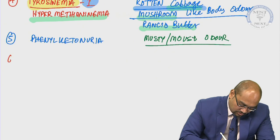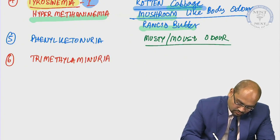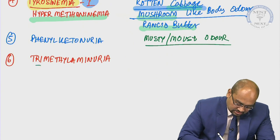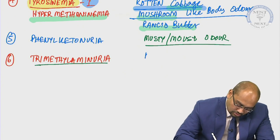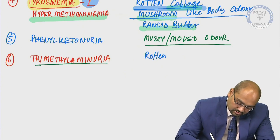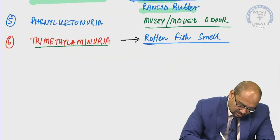We had also studied about trimethylaminuria. Please remember trimethylaminuria is a disorder also known as fish odor syndrome, and the smell associated with it is rotten fish smell — a very foul smelling disorder.